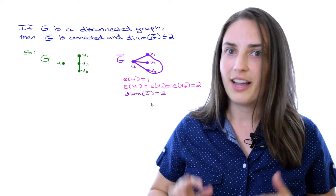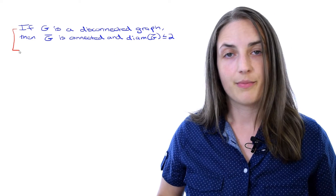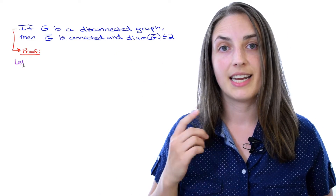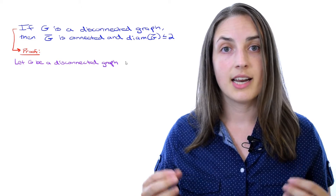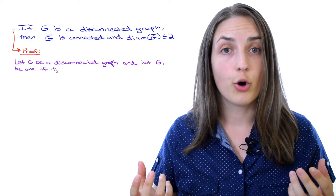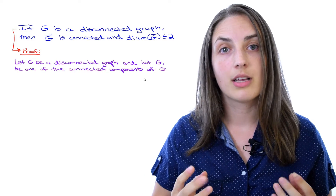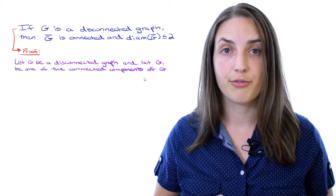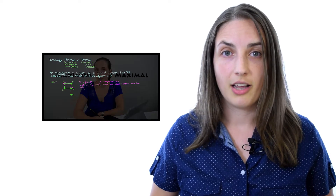We did an example and it worked, but that's not a proof. Let's go ahead and prove it in general. For a general proof, we have to take G to be any disconnected graph. Since the graph is disconnected, we know it has at least two connected components. Remember that a connected component is a maximal connected subgraph of the graph. If you want a refresher about the difference between the words maximal and maximum, check out this video or the links in the description below.